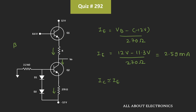Now, let's say the voltage at this node is equal to Vc. We can say that Vc is equal to 8.6V minus Vbe. That is equal to 8.6V minus 0.7V, which is equal to 7.9V. That means the voltage at this node is equal to 7.9V.